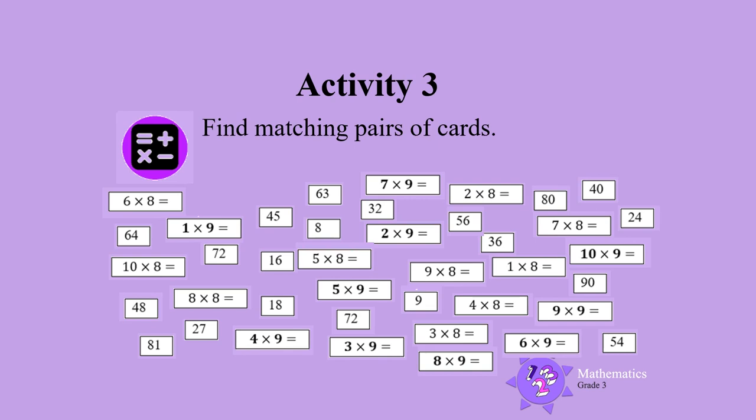Now, you need to find the matching pairs of cards. Let's do one together. Let's choose the multiplication card 5 times 8. Find the correct answer card. Did you choose the answer card 40? 5 times 8 is 40. That is correct. Now, let's remove these cards from the table.